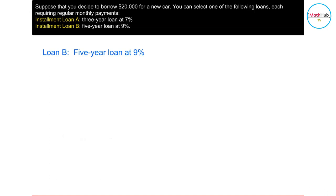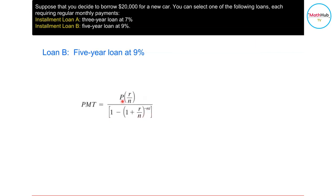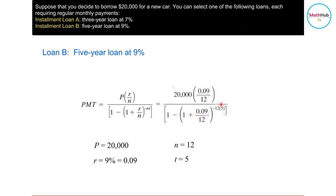Now let's compute the monthly payment and the total interest for loan B. We use this formula and plug in the information. P, the amount of the loan, is still $20,000. The rate R is now equal to 9%, which in decimal is 0.09. We are looking at monthly payments, so N equals 12 monthly payments per year. The duration of the loan is five years. Plugging into this formula, you get $415. For five years, you have a slightly lower monthly payment, but this is spread over five years.